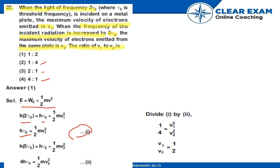And when the radiation is increased to 5V0, then 5hv0 equal to hv0 plus half mv2 square. So, 5hv0 minus hv0 will be equal to 4hv0 equal to 1 upon 2mv2 square.